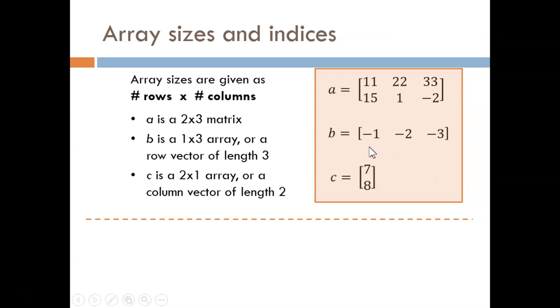B has only one dimension, so it is a vector. You can say either that B is a one-by-three array or a row vector of length three. C is a two-by-one array or a column vector of length two.